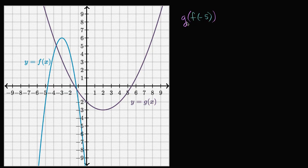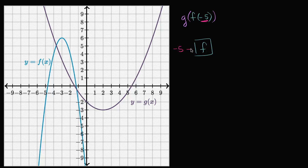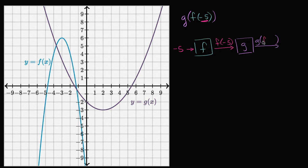It can sometimes seem a little daunting when you see these composite functions — you're evaluating the function g at f of negative five. But you just have to remind yourself what functions are all about: they take an input and give you an output. So we're going to input negative five into function f, it's going to output f of negative five, and then that output becomes the input into function g, giving us g of f of negative five.